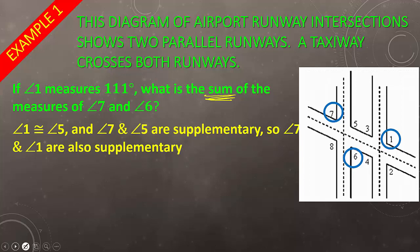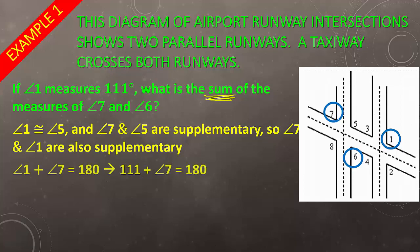The reason for that is because they are corresponding angles, and corresponding angles are congruent. Since angle 7 and angle 5 are supplementary, angle 7 and angle 1 are also supplementary, which means that they add up to 180. So I have angle 7 and I know angle 1 — subtract 111 from both sides, and you get angle 7 equals 69 degrees.